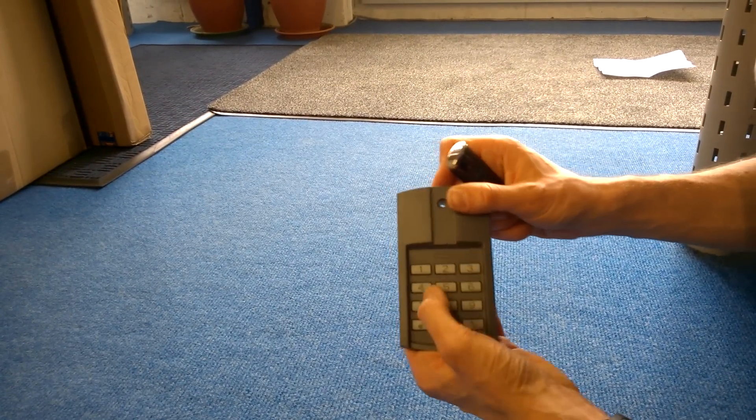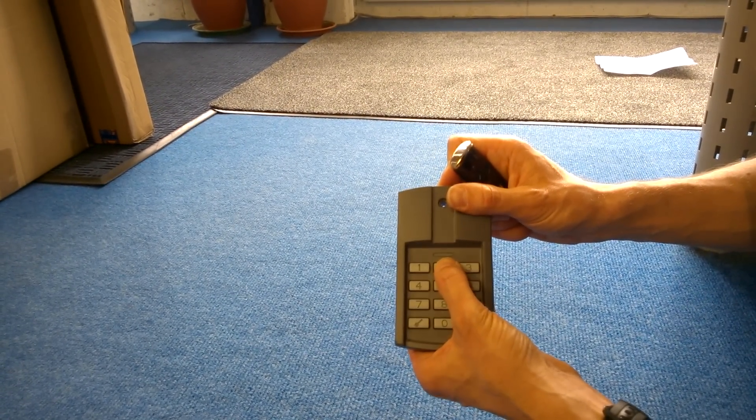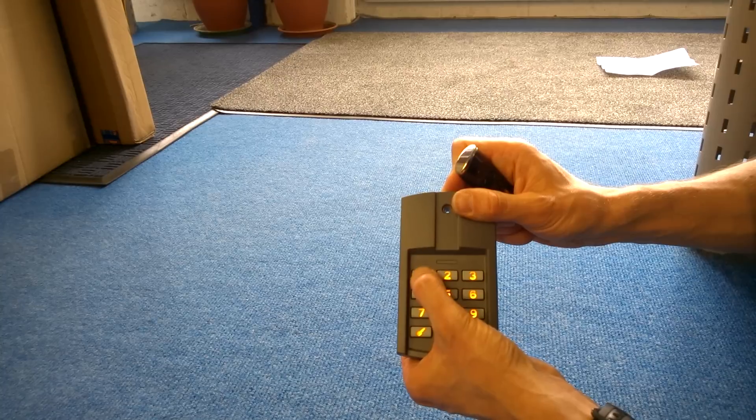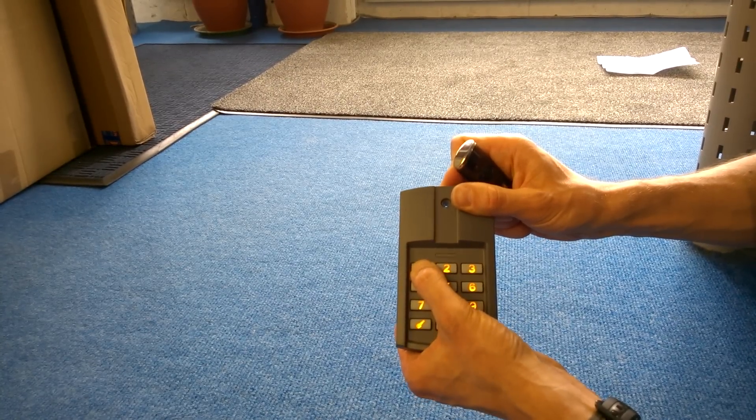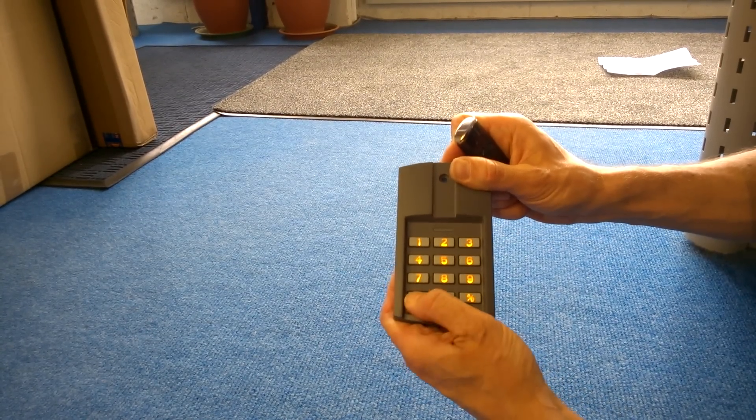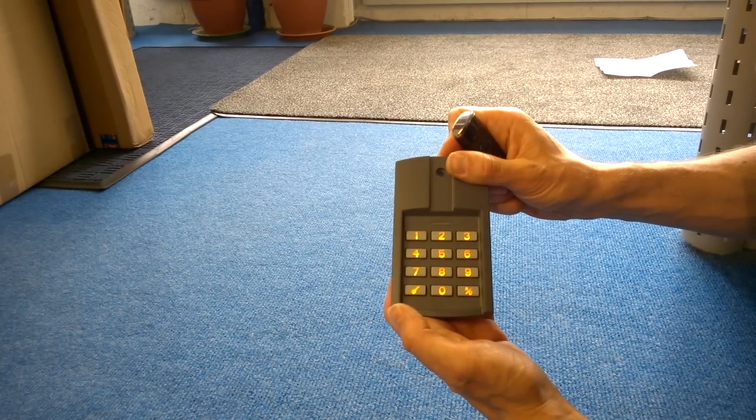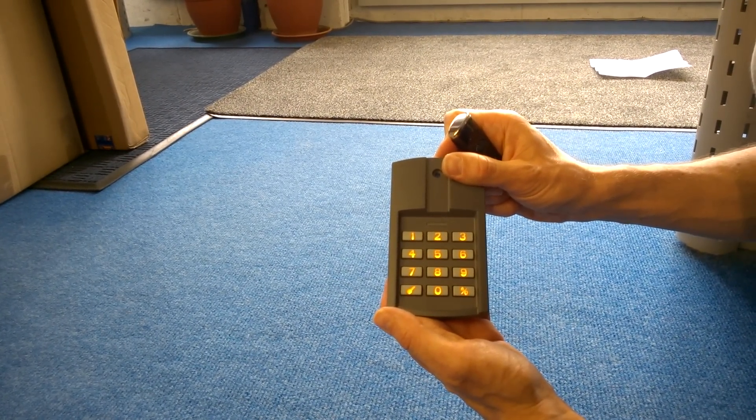Now that should have been coded in. So if I press the button to illuminate the keypad, put my code in—one, one, one, one—press the key button... you can hear that's now operating the door.